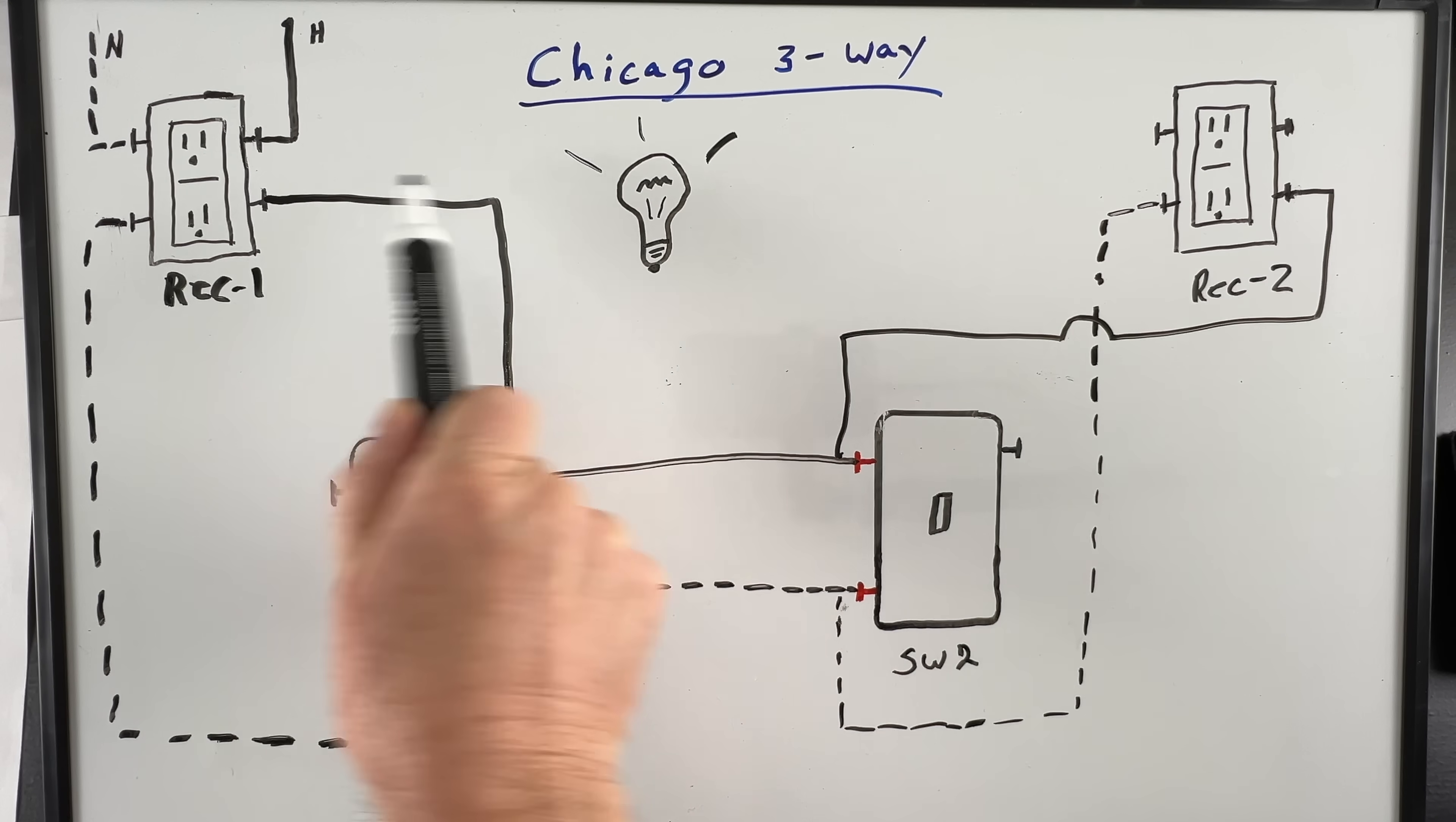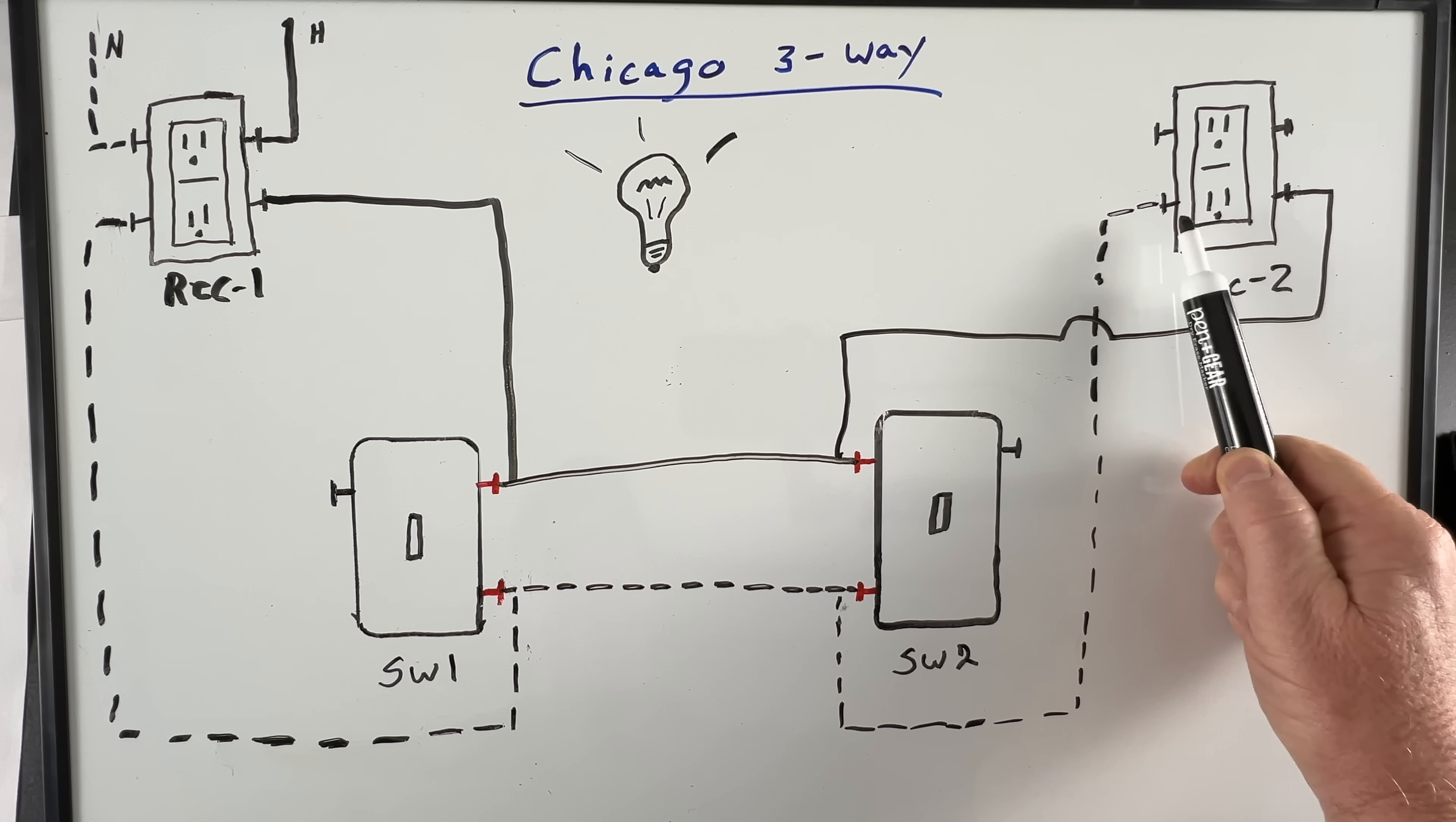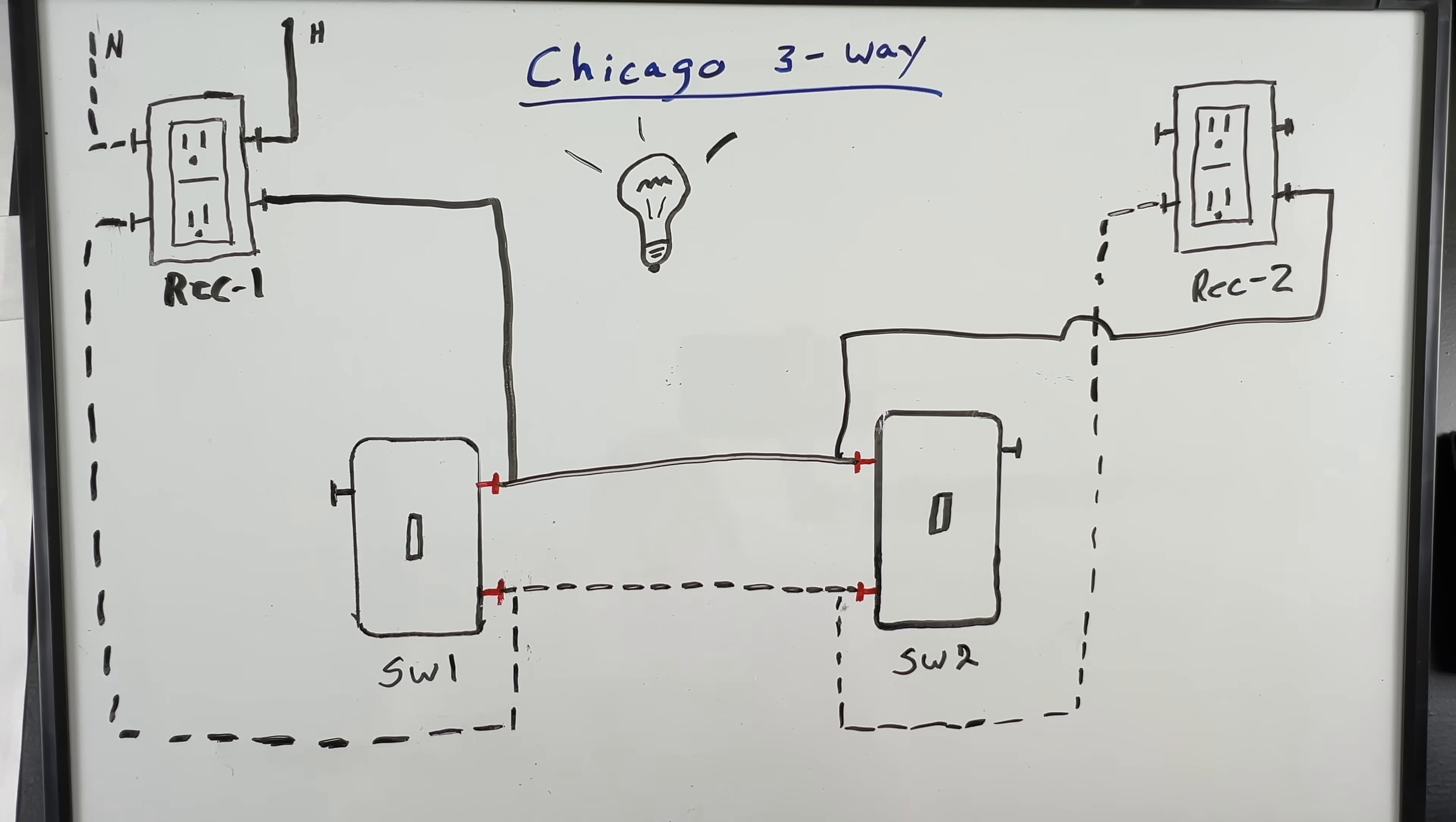As you can see, we now have a circuit path from receptacle one to switch one to switch two up to receptacle two. The return from receptacle two down through switch two back to switch one and up to receptacle one. So these receptacles will be powered regardless of the position of either one of these switches.